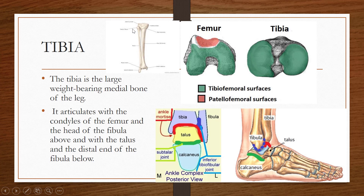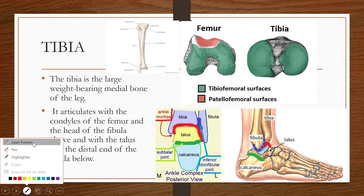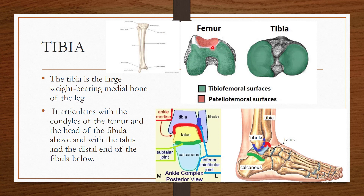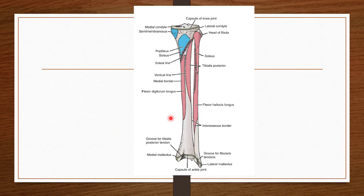As seen in this diagram, the tibia is the medial bone of the leg and the fibula is the lateral bone. The tibia articulates with the condyles of the femur and the head of the fibula above, and with the talus and the distal end of the fibula below. The upper end of the tibia articulates with the head of the fibula, and the lower end articulates with the lower end of the fibula.